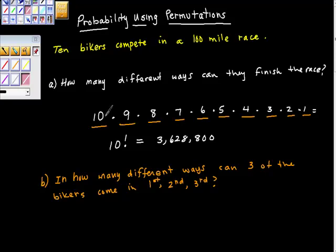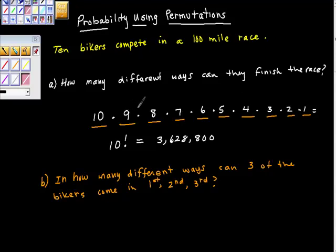There are 3,628,800 different ways that these riders could finish in order in this race. When they first start, all ten of them have a good shot at winning first place, but once one of them does, there are only nine riders left — assuming no ties, they're all equally able to take second place, and so on.